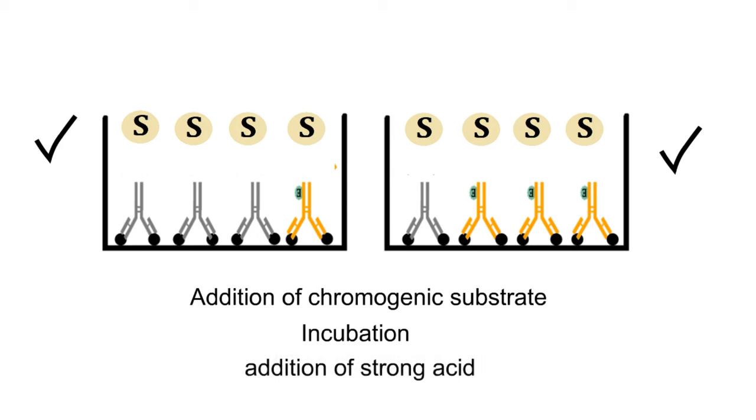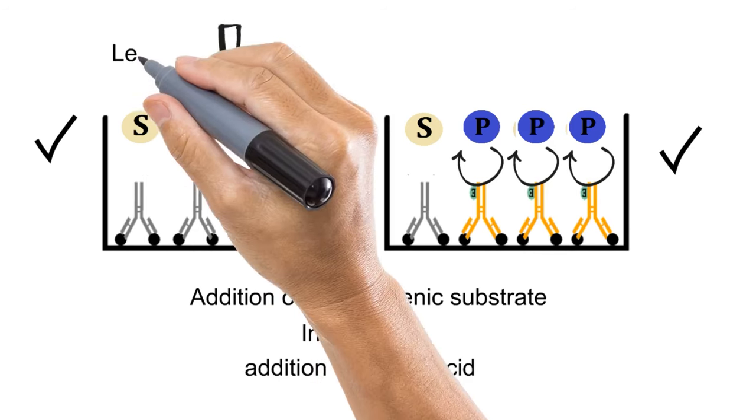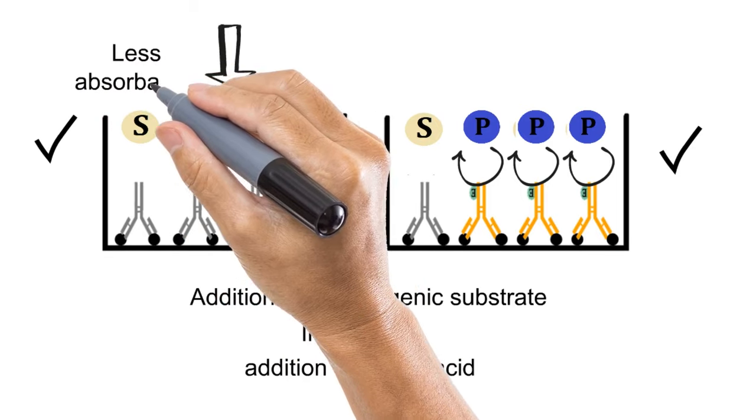Now during this incubation, the enzyme connected to the enzyme-linked antibody will convert this substrate into the color product. Now if the number of enzyme-linked antibodies are less in the well, as in this case, less product will form and hence the color intensity and its absorbance value will be less.